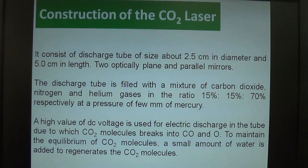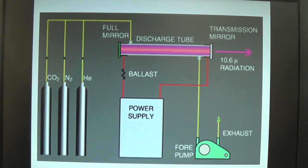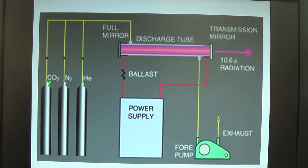Due to electric discharge, CO2 molecules break into CO and O — carbon monoxide and oxygen. To maintain the equilibrium of CO2 molecules in the gas discharge tube, a small amount of water is added to regenerate the CO2 molecules. The nitrogen gas becomes excited by electron collisions, the N2 atoms collide with carbon dioxide, and as a result CO2 vibrates in different modes, ultimately emitting wavelengths of 10.6 and 9.6 micrometers.